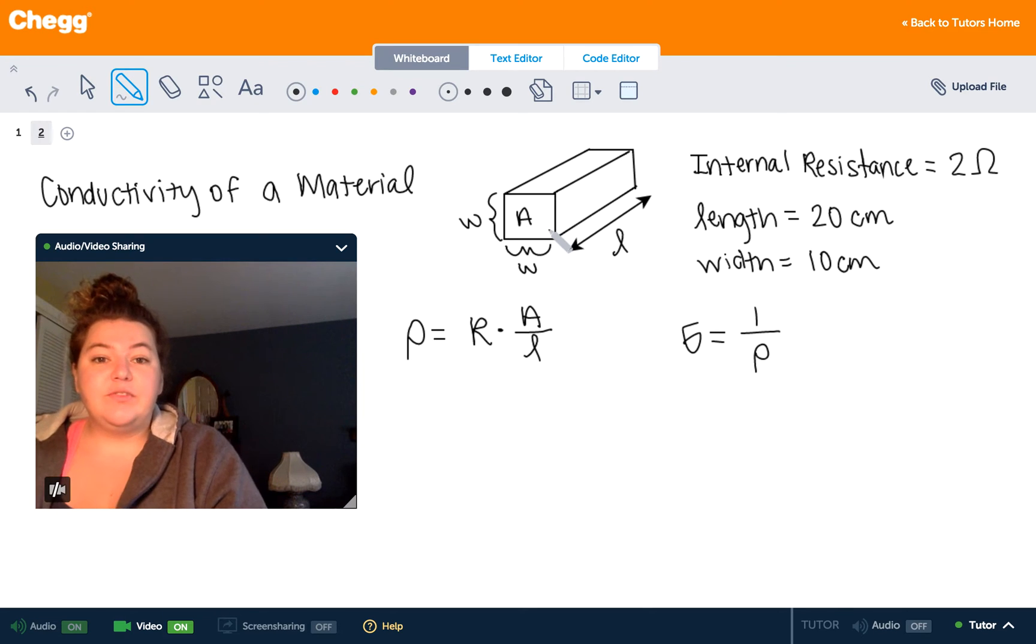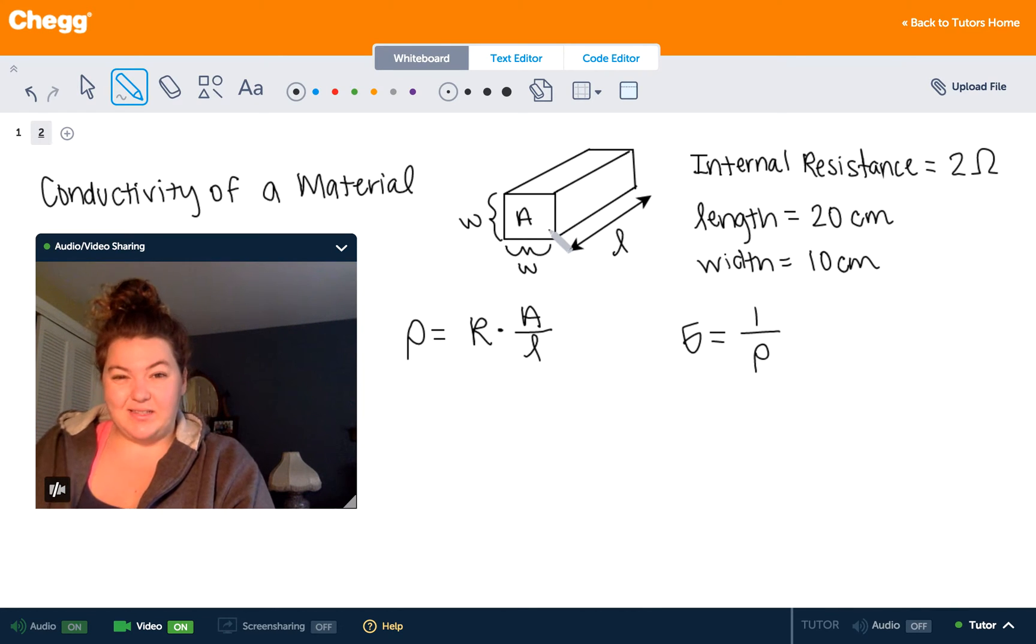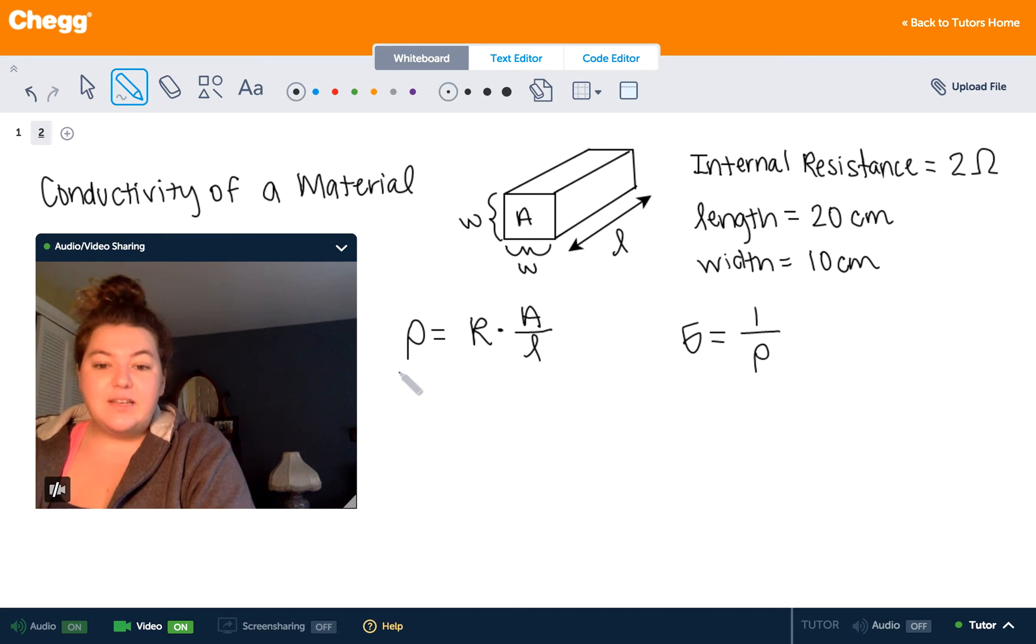Now you may recall, if you've ever had to calculate resistivity before or resistance from resistivity, that resistivity is equal to the internal resistance times the cross-sectional area, which is this square right here in this material, divided by the length of material we're considering right here.